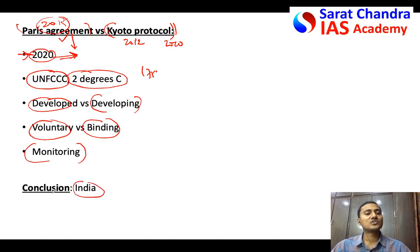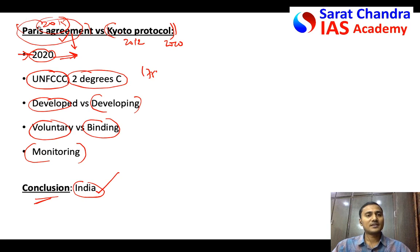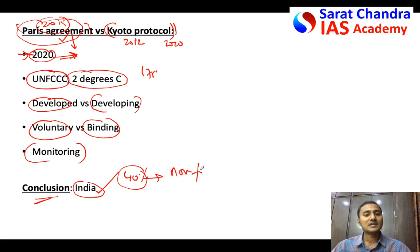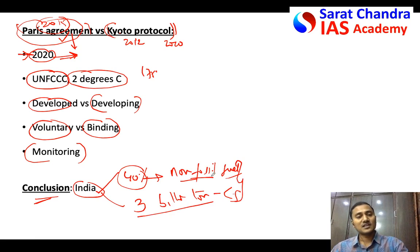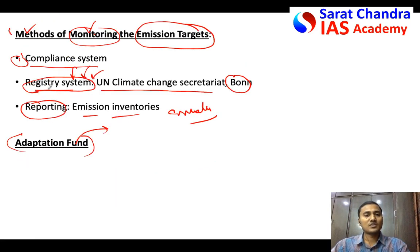For the conclusion of this international-relations question, mention India's role. India committed to the Paris Agreement and pledged that by 2030, 40% of its overall energy production will come from non-fossil fuels — essentially renewable energy, since currently most of India's energy comes from fossil fuels. India also committed to creating 3 billion tons of carbon sink, which would require nearly doubling forest cover. End the answer with these two to three points about India's commitments.